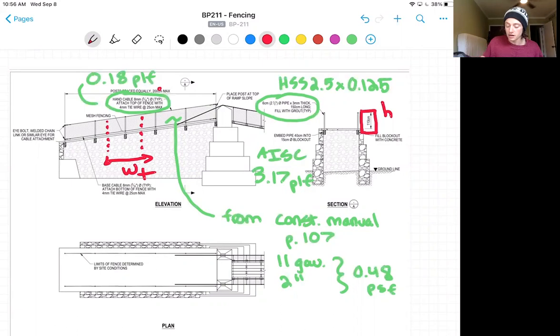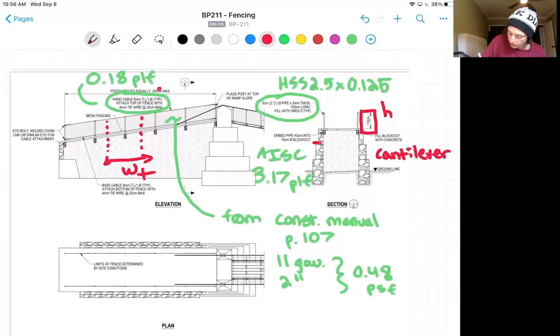And you can also note that there is a 40 centimeter embedment into a 15 centimeter diameter block out. And we're going to treat this post as a cantilever beam when we do its analysis.